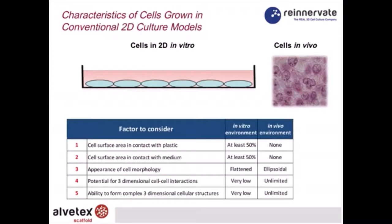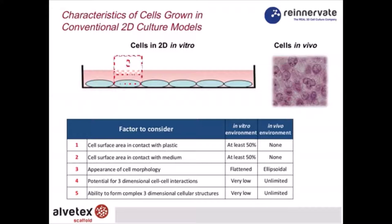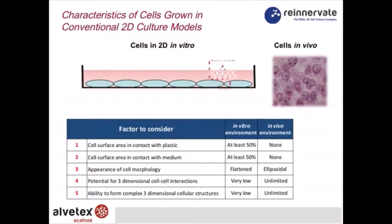Let's look more closely at what happens in 2D culture. A cell will have approximately 50% of its surface exposed to the flat substrate, with the equivalent exposed to the incubating medium above. Cells are flat and very thin, and the interaction between cells is minimized at their edges.